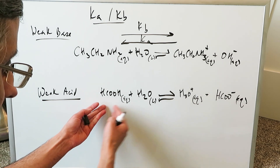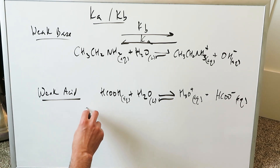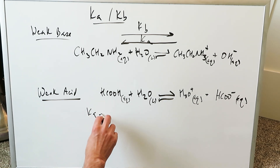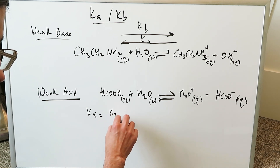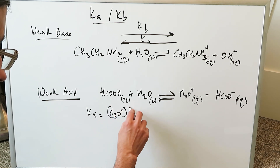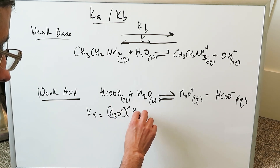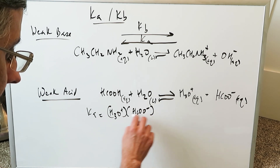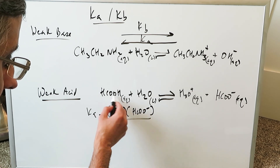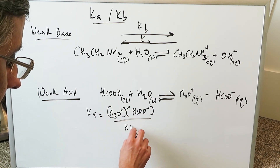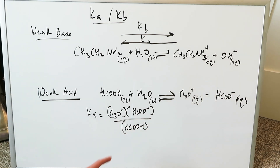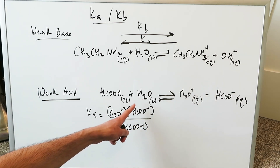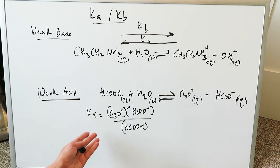When you look at this reaction, you're looking at a weak acid — a dissociation — so you're bringing in the Ka. The Ka here is exactly what you would expect: the conjugate acid times the conjugate base (the formate anion), divided by the concentration of your weak acid, formic acid. Because you know water, pure liquids, and solids are kept out of these equilibrium expressions.